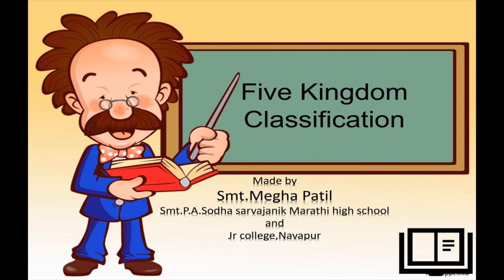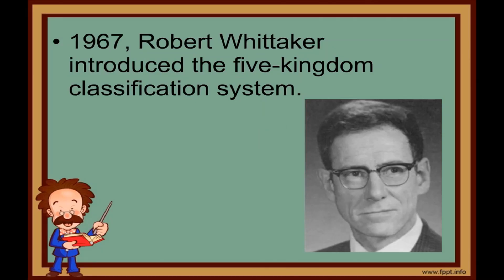The system of placing organisms in distinct categories by taking into consideration their similarities and dissimilarities is called classification. The system of classification in which the living organisms have been classified into Five Kingdoms is called the Five Kingdom System of Classification.